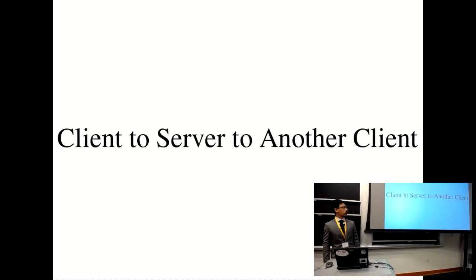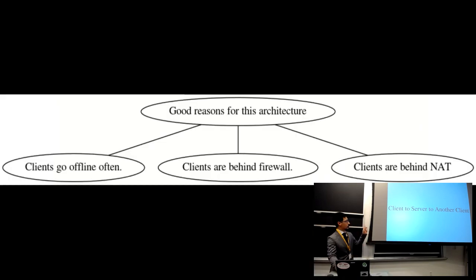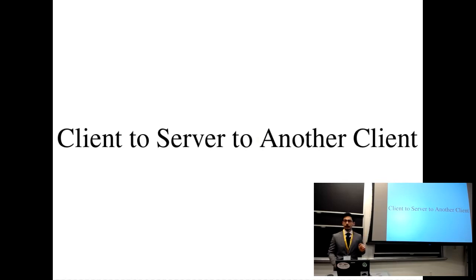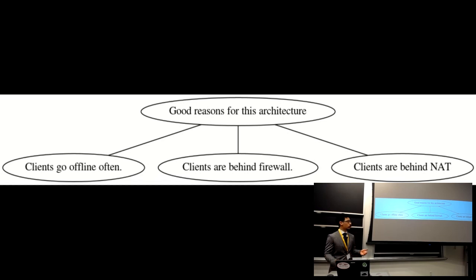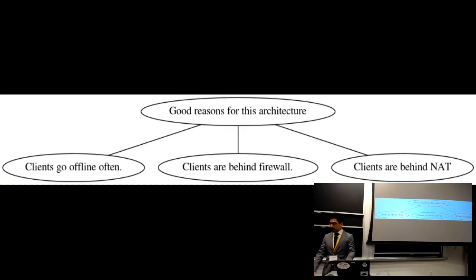The approaches marketed towards novices use a more complicated method where you have a computer in the middle — and often it's someone else's computer. There are actually some good reasons for this: if the clients go offline often but the server stays up, that's useful. Another reason is if the clients are behind a firewall or behind NAT so you can't get the IP address of the other one. But in the situation where two computers are right next to each other and can directly connect, we don't actually need this client-server-client approach.